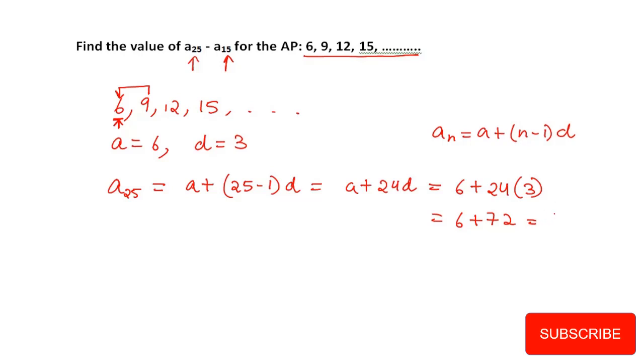And then a₁₅. We have to find a₁₅, which is a + (15-1)d. So the value is 6 + 14(3). You will get 6 + 42, which gives you 48. So now you can easily subtract these two values.